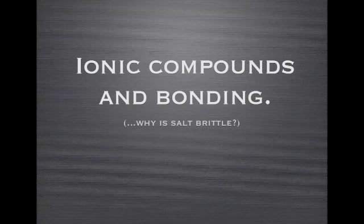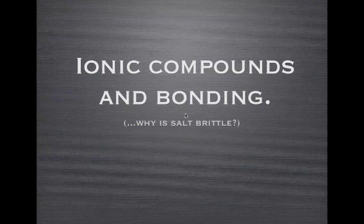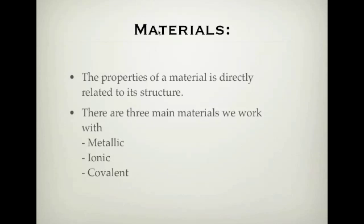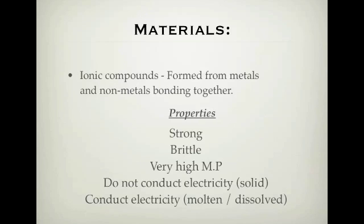We're looking at ionic compounds and ionic bonding. This first part is about the structure of ionic compounds and how that relates to their properties. The subtitle is 'Why is salt brittle?' This is part of the materials science section, which looks at how properties of a material directly relate to its structure. We've done metallic bonding already; now we're on ionic, and covalent is coming next.